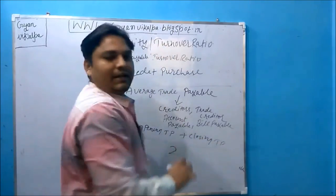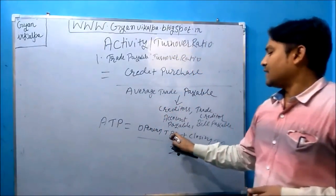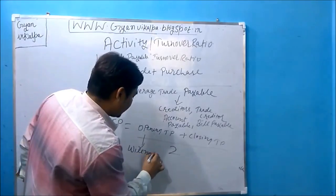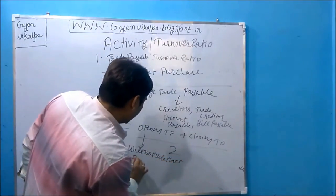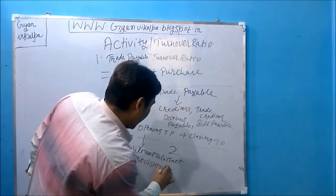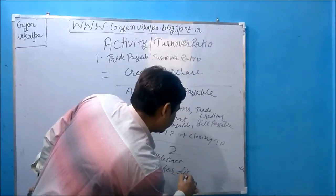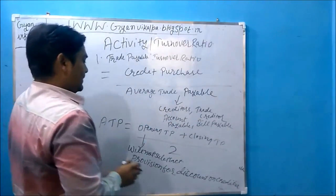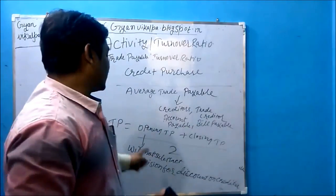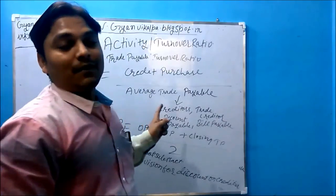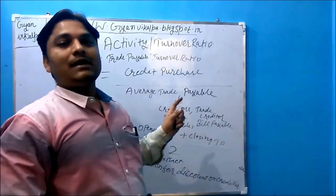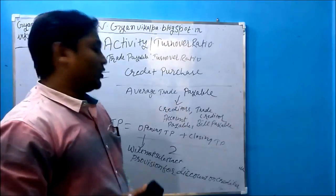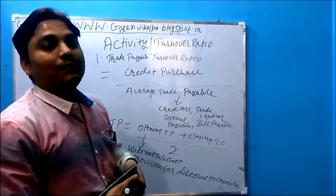While calculating average trade payable, we will not take into consideration provision for discount on creditors. Similarly, when calculating average trade receivable, we will not subtract provision for doubtful debts or provision for discount on debtors. This is important — if you subtract these provisions your answer will be wrong.